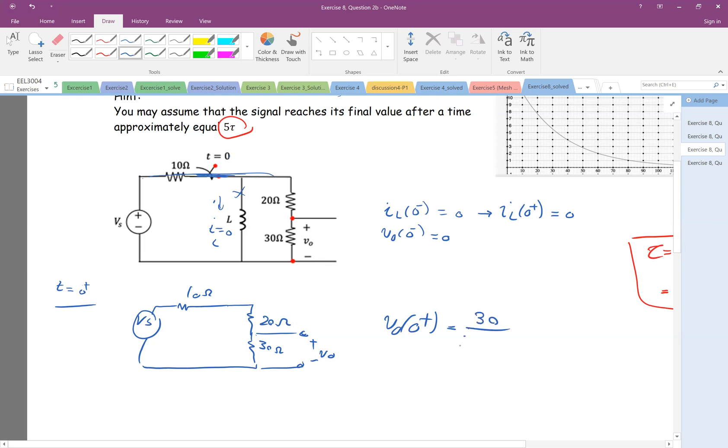Therefore, V0 at zero plus is what? It's 30 divided by 30 plus 20 plus 10 times Vs. So 30 divided by 60 times Vs, actually half of Vs.